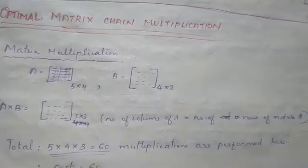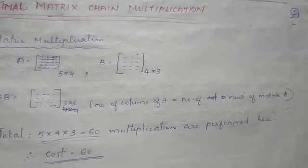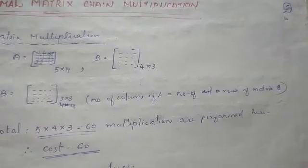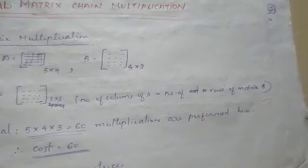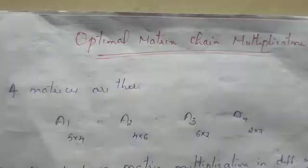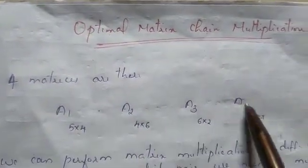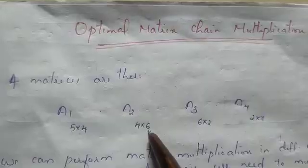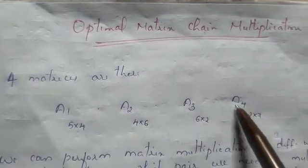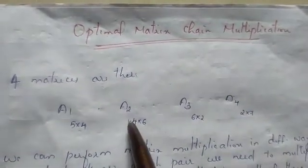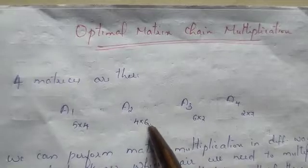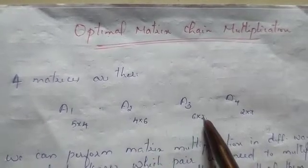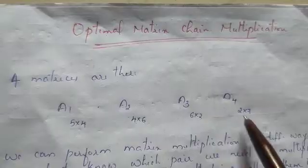For higher dimensional matrices, when we multiply matrices the cost can be high, but we can reduce the cost by choosing the right order. I have 4 matrices: A1 with dimension 5x4, A2 with 4x6, A3 with 6x2, and A4 with 2x7. A1 and A2 can be multiplied because the inner dimensions match. Similarly A2 and A3, and A3 and A4.